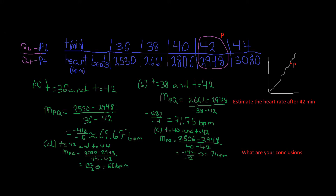We plug in the numbers: 2,530 minus 2,948 divided by 36 minus 42. P is our initial point. For all the problems, P is going to be on the right side. We subtract against the time of 42 minutes, giving us negative 418 divided by negative 6, which is approximately 69.67 beats per minute.